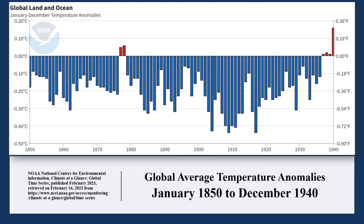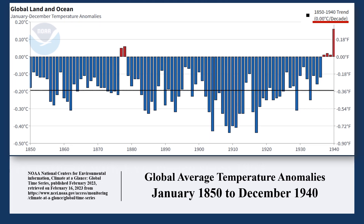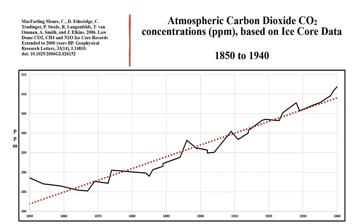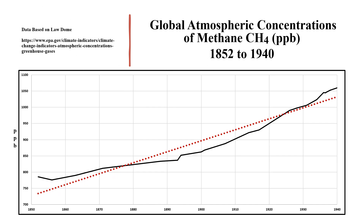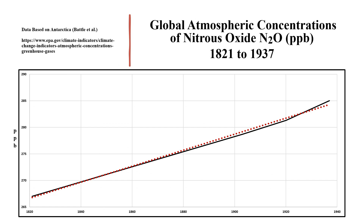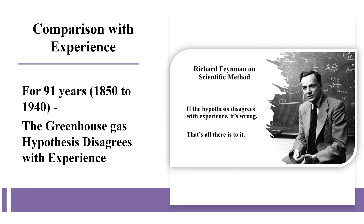From 1850 right up to 1940 — that is, 91 years — this is the NOAA data. The trend of global average temperature over those 91 years is flat at zero. What were the greenhouse gas concentrations during that same period? Carbon dioxide concentration increased from 289 to 312 parts per million. Methane concentration increased from 786 to 1,060 parts per billion. Nitrous oxide records are sparse, but over a similar period its concentration increased from 267 to 285 parts per billion. The greenhouse gas hypothesis over these 91 years clearly disagrees with experience.